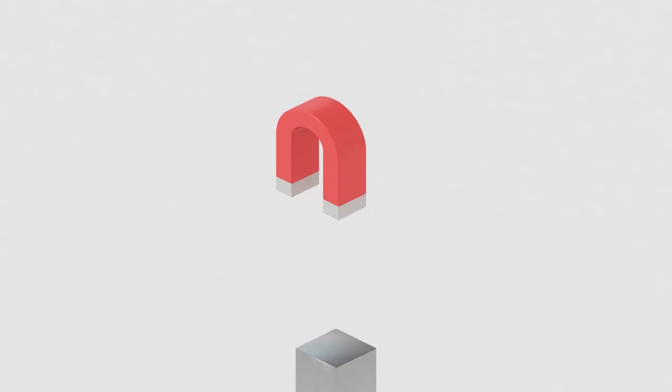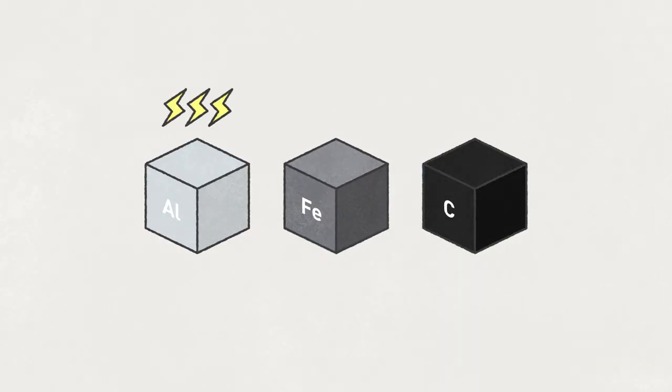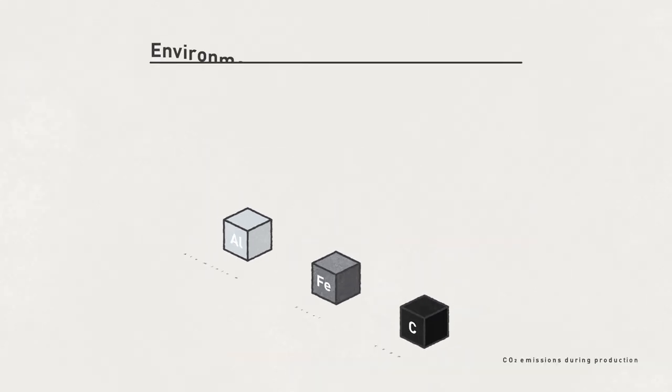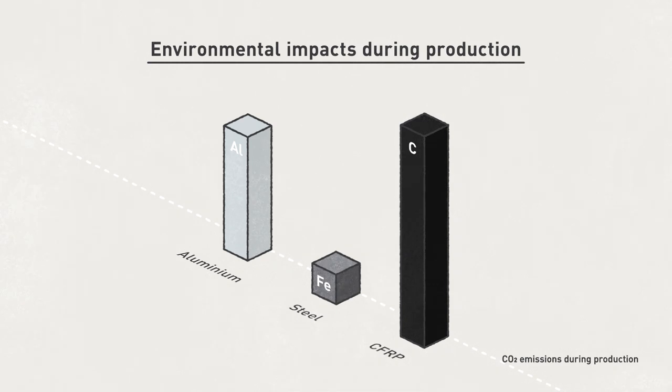Making aluminum requires a large amount of electricity. Carbon fiber requires high temperature treatment. Steel requires much less energy, and this means less CO2 emissions during production.